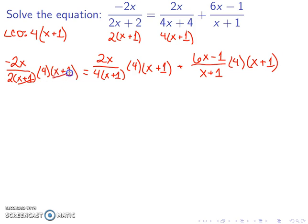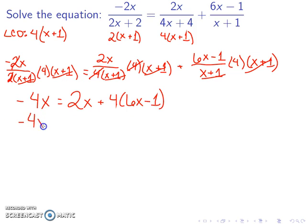So here, the x plus 1s will cancel. I have negative 2s that are also going to cancel. I end up with negative 4x. Here, my x plus 1s cancel along with my 4s, so I just end up with 2x. Here, the x plus 1s cancel, so I have 4 times 6x minus 1. So negative 4x is equal to 2x plus 24x minus 4. Combining like terms, 2x plus 24x is 26x minus 4.